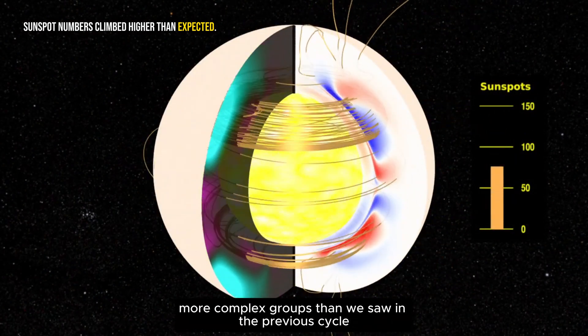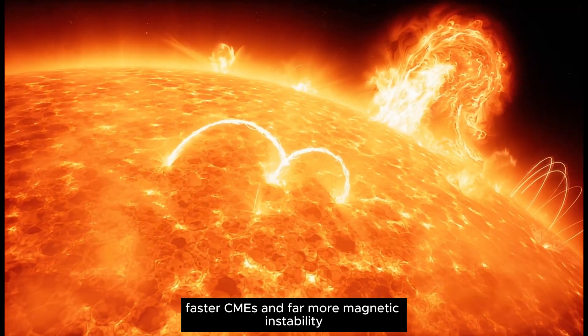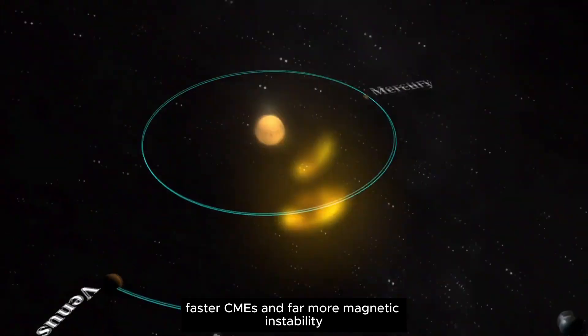more complex groups than we saw in the previous cycle. These tangled regions fuel stronger flares, faster CMEs, and far more magnetic instability.